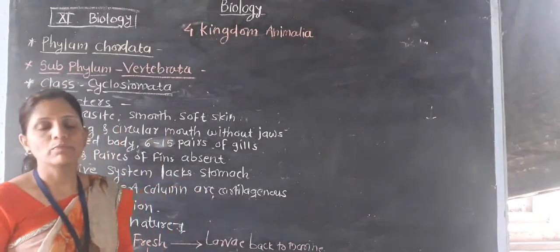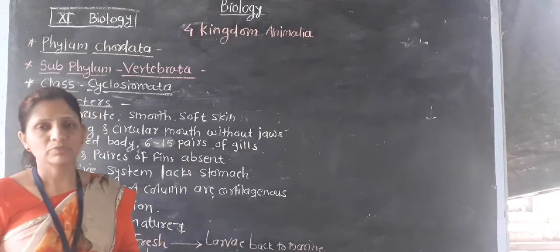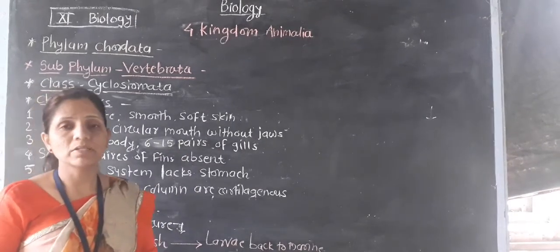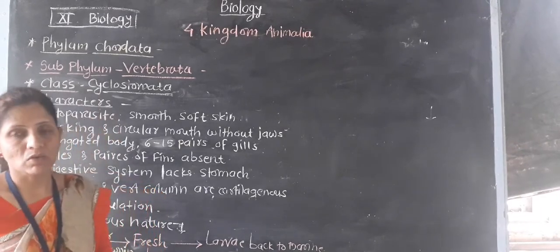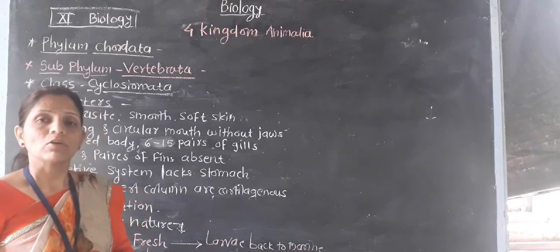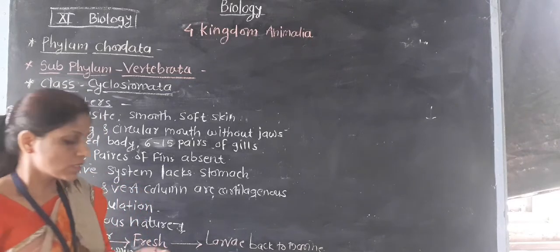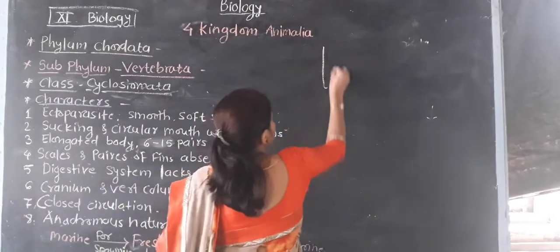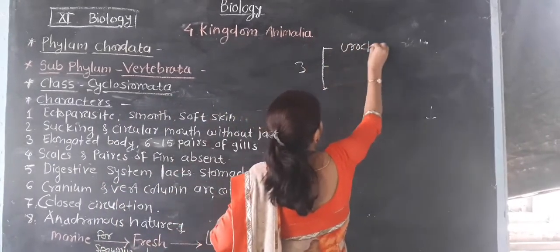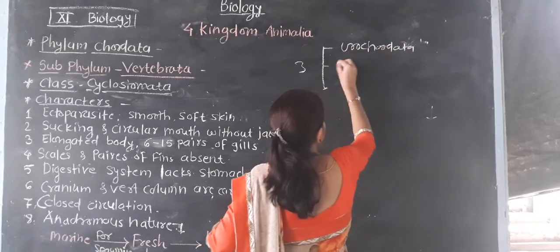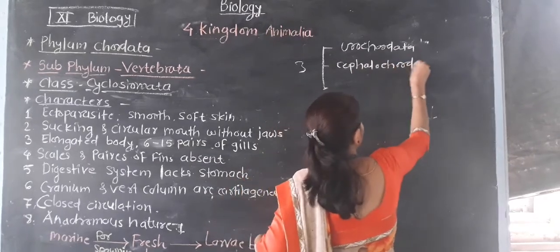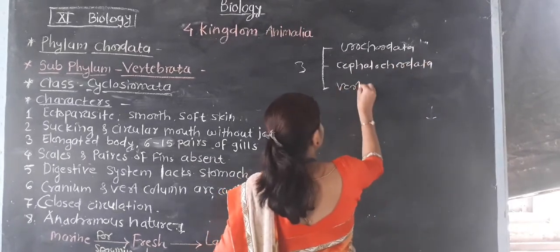Hello everyone, today we are going to start from Biology chapter number 4, Kingdom Animalia. But before that, in our previous lecture we have seen classification of chordates. We have also seen some characters of chordates, and phylum Chordata is divided into 3 subphylums: Urochordata, Cephalochordata, and the third one, Vertebrata.